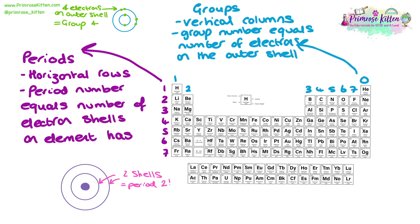Period number and group number can act like coordinates to highlight an element on the periodic table. For example, if an element is on period 4, group 2, you go to the fourth row down, second column across, and you find that the element is calcium. You may have noticed a chunk in the middle of the periodic table without a group number — these are the transition metals. They have unique properties we'll come back to in a later topic.